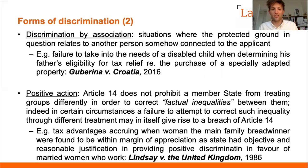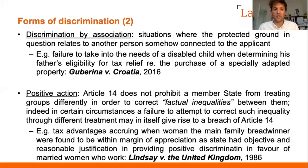Article 14 does not prohibit what's known as positive discrimination — a state can treat groups differently to correct factual inequalities between them. Indeed, in certain circumstances a failure to positively discriminate can give rise to a breach of Article 14. For example in the UK, tax advantages given to women who worked as the main breadwinner were more beneficial than those given to men, but this was found lawful because the state had an objective and reasonable justification for providing positive discrimination in favor of married women who worked.